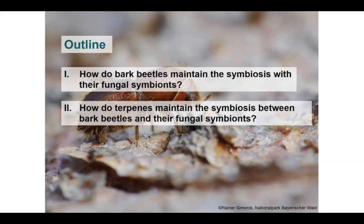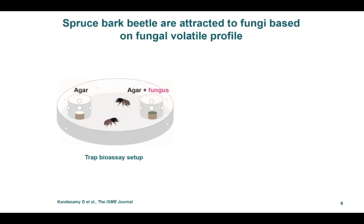We thought that the volatiles emitted by fungi act as recognition cues for bark beetles. To test this hypothesis, I designed an olfactometer made up of a circular petri dish containing two traps facing opposite to each other. Holes were made on the sides so that the beetles could enter inside. Fungus-free agar plugs were placed in the control traps and agar plugs containing a single fungus were placed in the treatment traps. The beetles and the agar plugs were not in direct contact; to reach the contents inside the traps, beetles had to follow through volatiles primarily through olfaction.